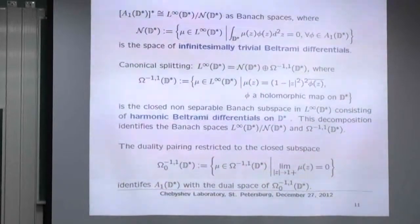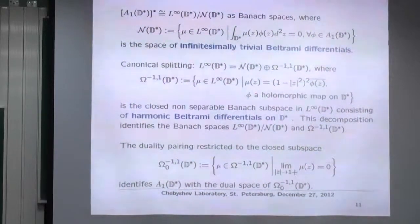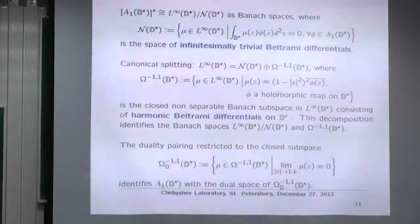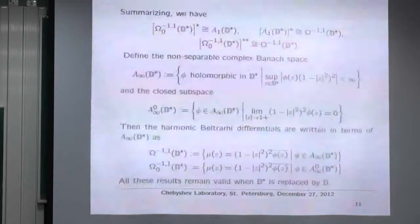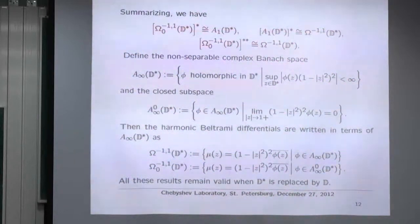There are various subspaces: N(D*) is going to be a kernel — a null space at a certain point; these are called infinitesimally trivial Beltrami differentials. There is a canonical splitting into a direct sum of N(D*) with another space important to us — L∞ with a measure coming from the Poincaré disk. These are called harmonic Beltrami differentials. There is a standard duality pairing, and sometimes we deal with things going to zero, where the index zero means the limit at z → 1 from inside is zero.